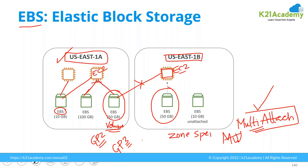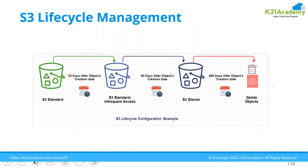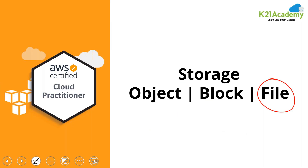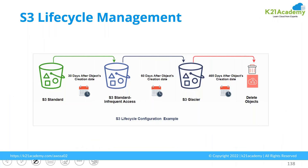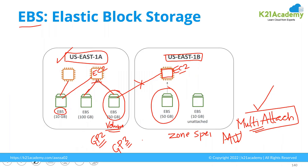Some people might be thinking: if EBS can be attached to multiple machines at a time, why would I need a file system? The difference is scalability. With block storage multi-attach, I can attach a single EBS volume to maybe up to 20 machines at a time, not more than that. But with a file system, you can attach a single storage location to thousands of machines at a time. So if at some point you need to attach a single EBS volume to a limited number of EC2 instances, you can use multi-attach. But if thousands of employees want to share a single storage location, multi-attach is not the feature to use — it will be file storage.